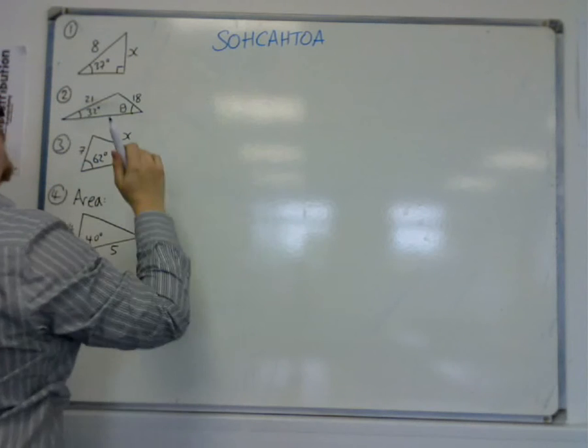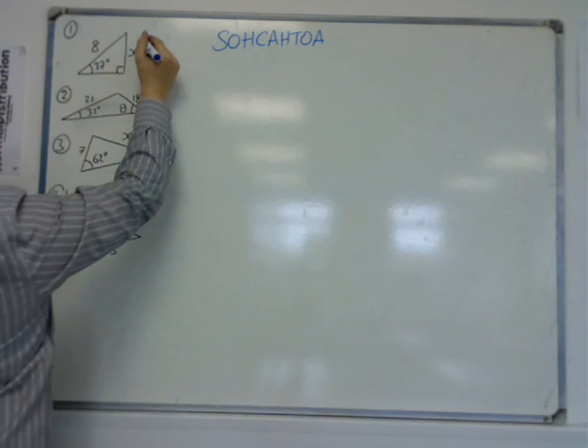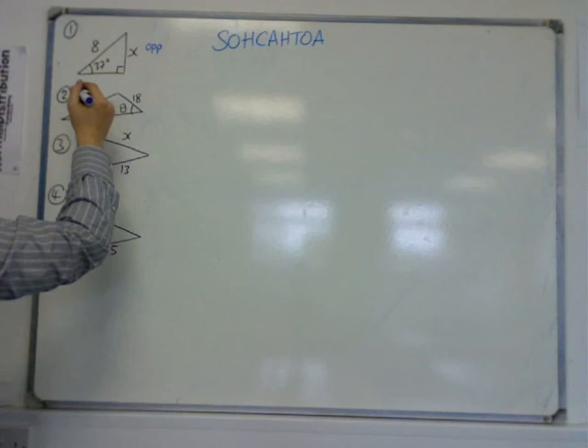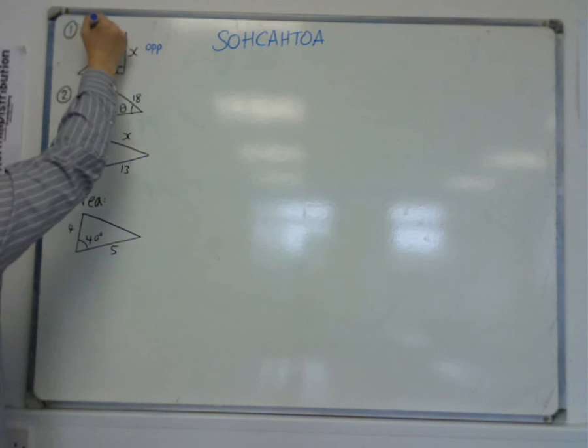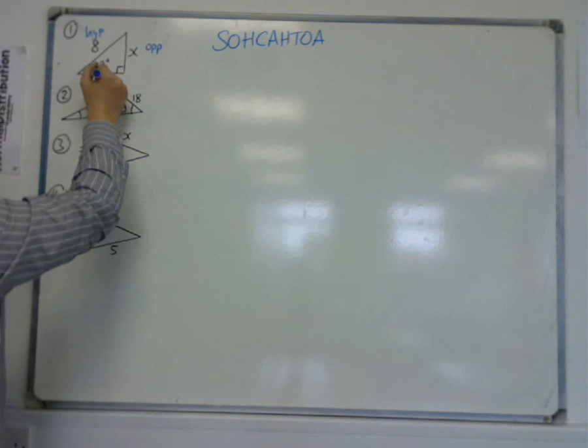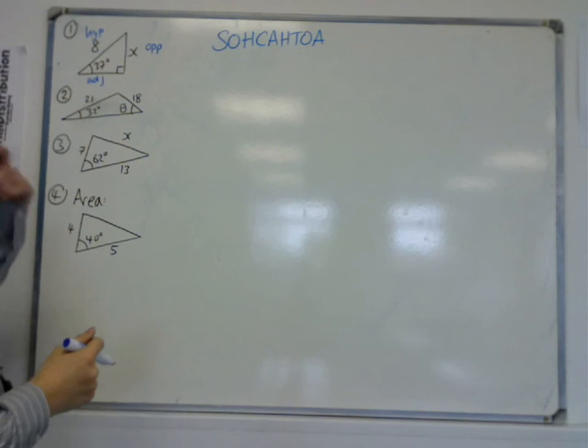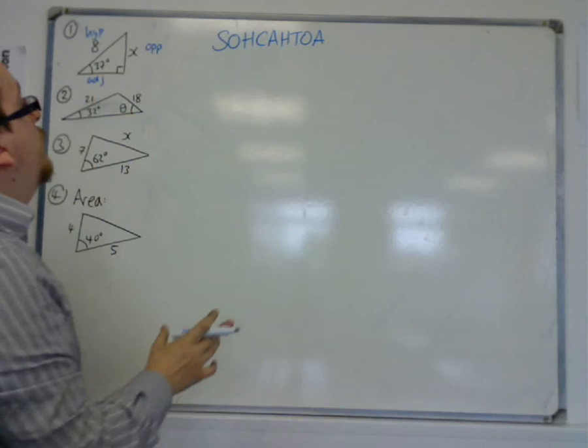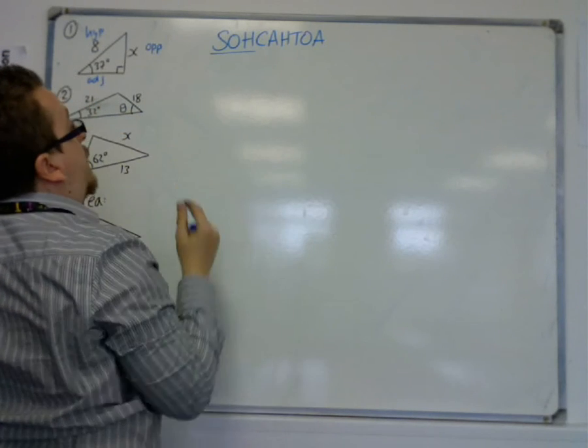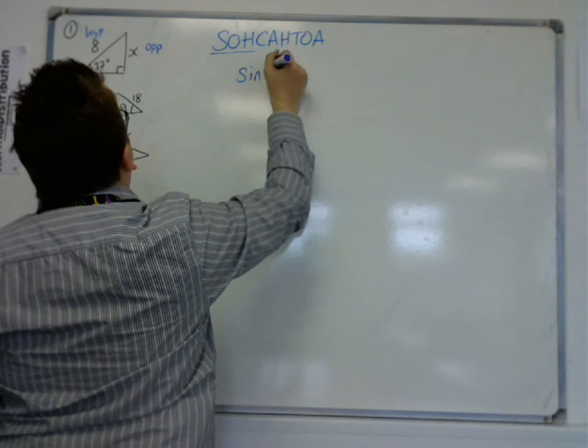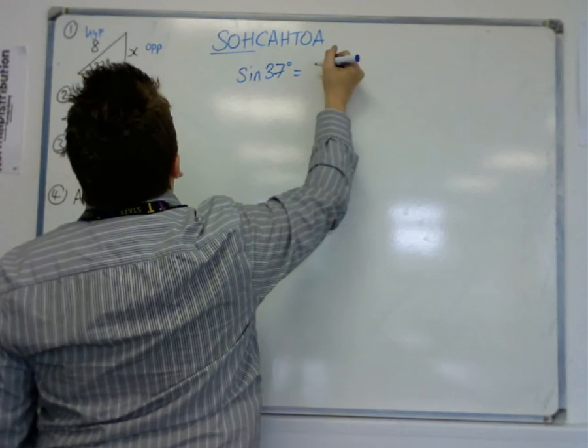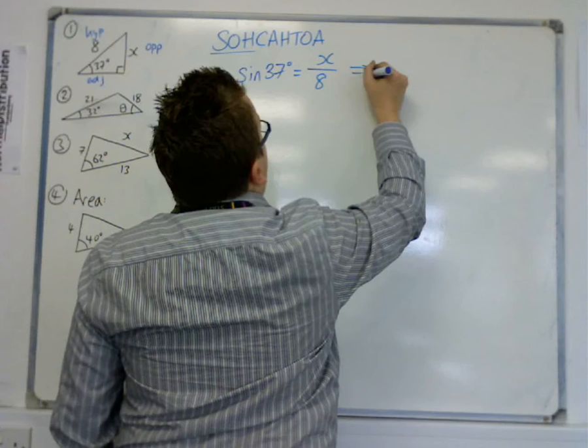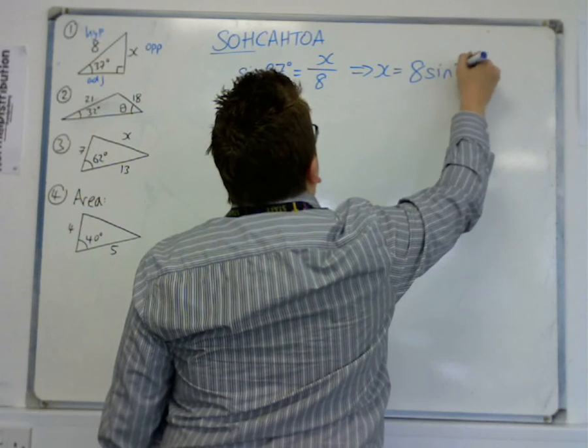So, SOHCAHTOA, first of all, label your triangle. Recognize that this is the side that is opposite the angle in question. So that's the opposite, the O. This is always the hypotenuse, the H. And this is the adjacent, the A. We are looking for O, and we have H. So we want OH, so we're going with SOH. So that means that sine of 37 degrees is equal to the opposite over the hypotenuse. So X is equal to 8 lots of sine 37.